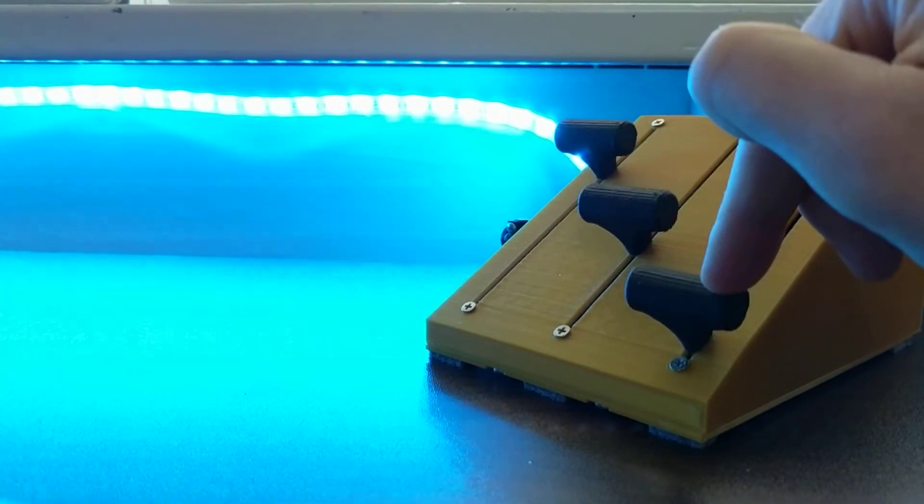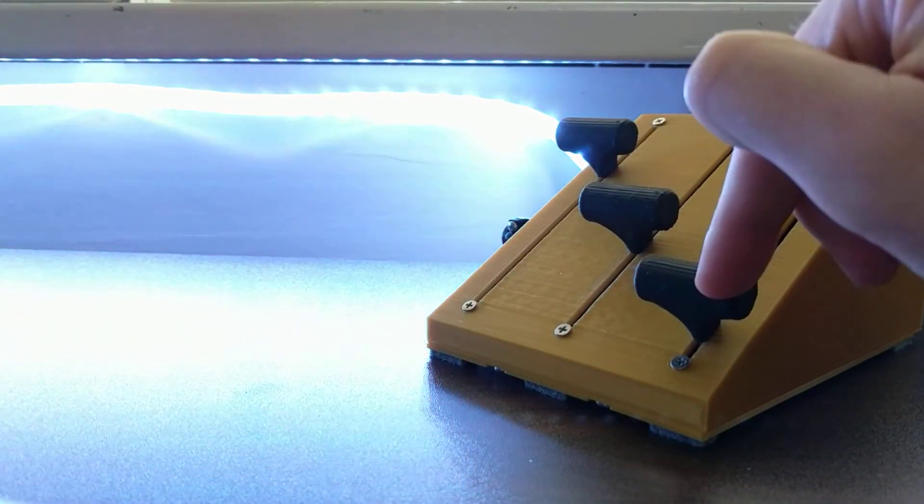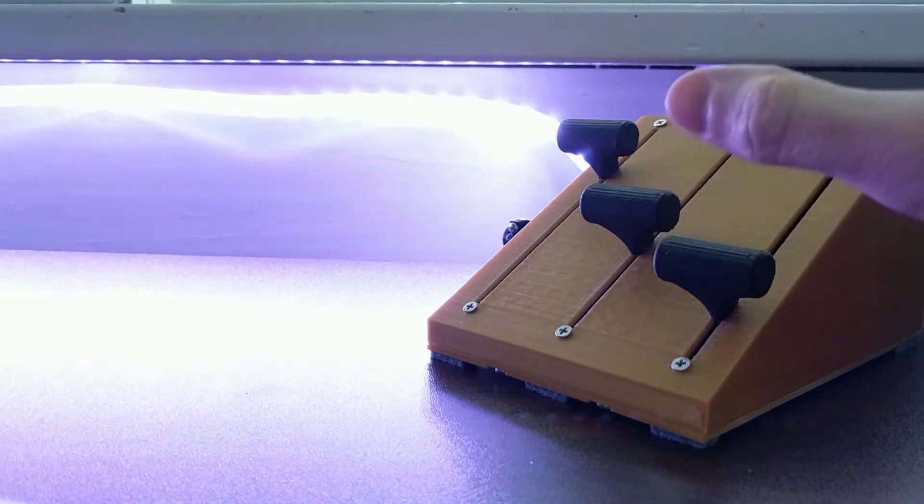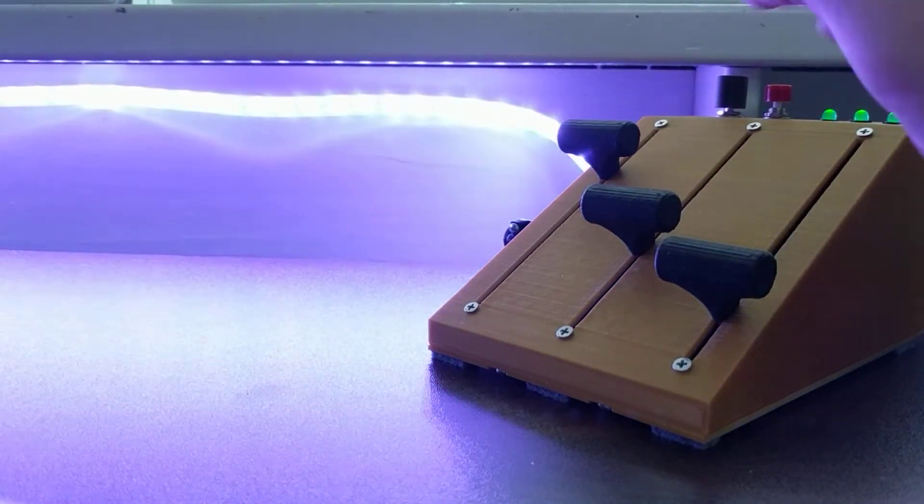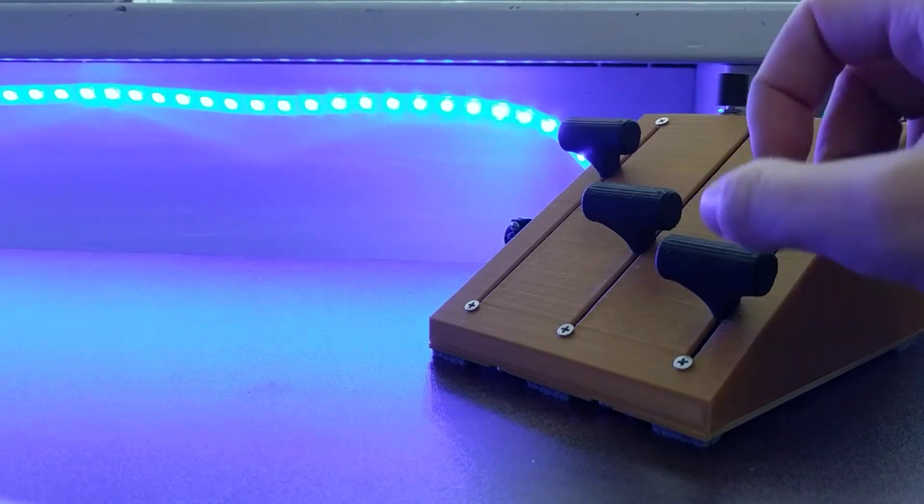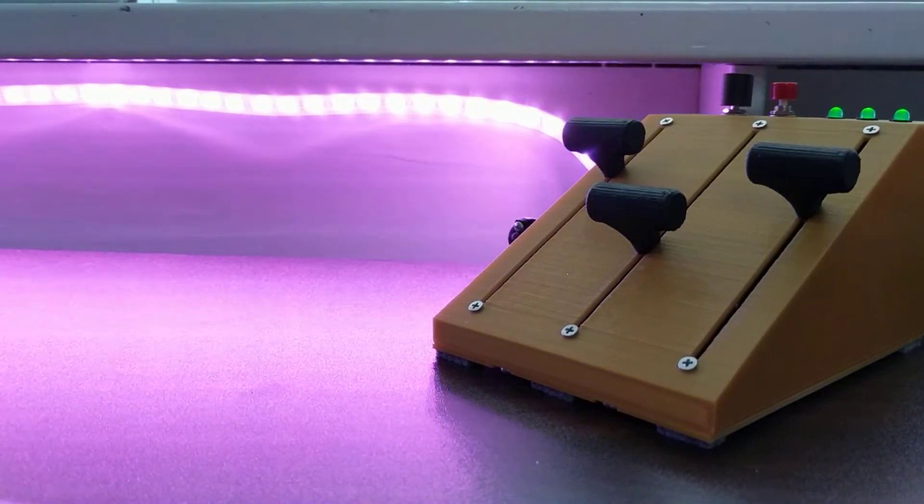And now these three sliders determine the speed of each color. So they start out at white, and then you can see them disperse because each color has a different speed. And you can change these speeds to whatever you want.